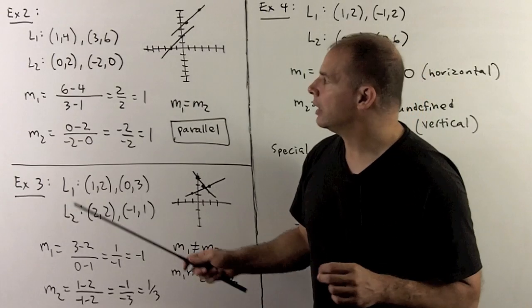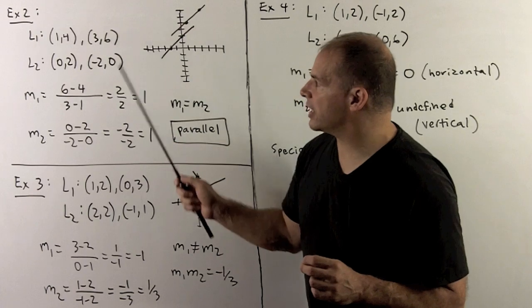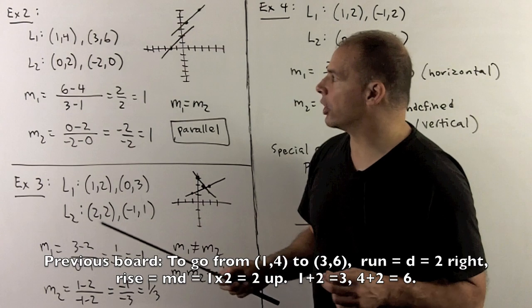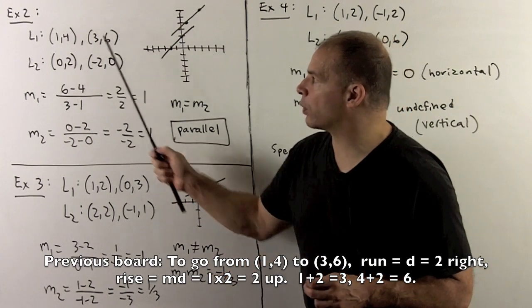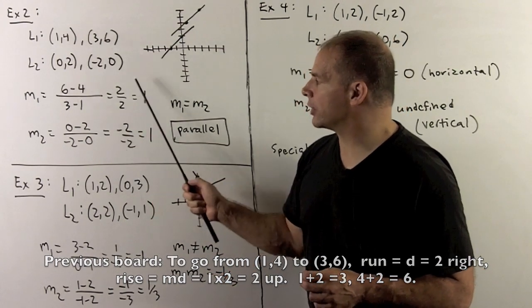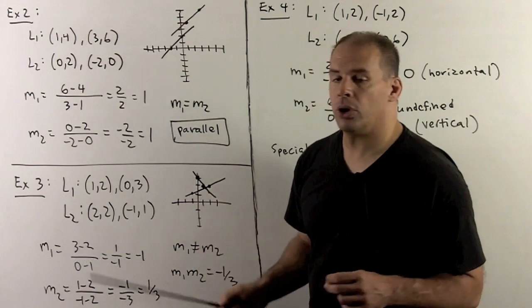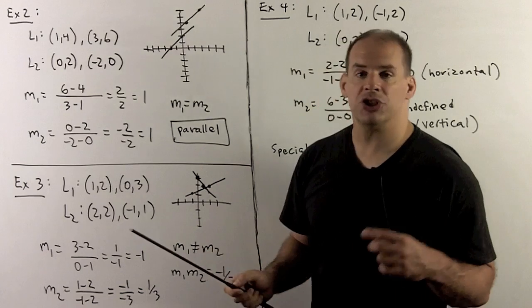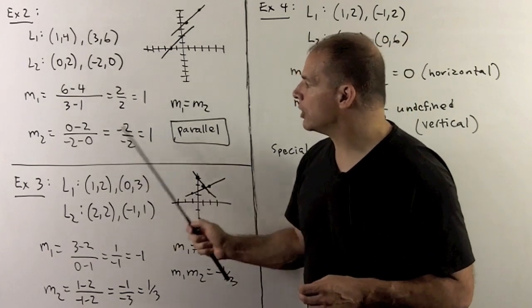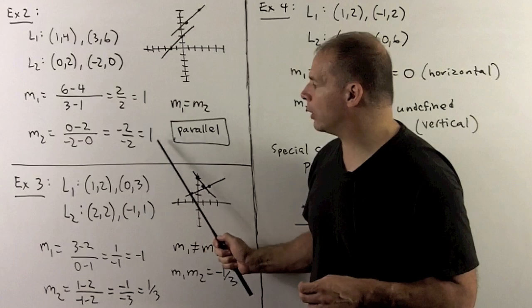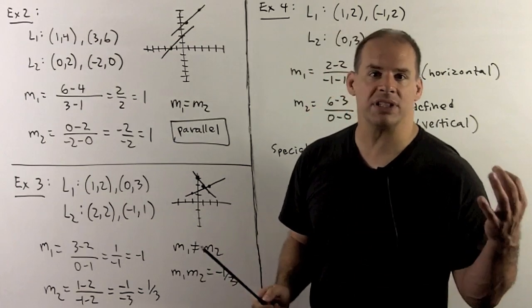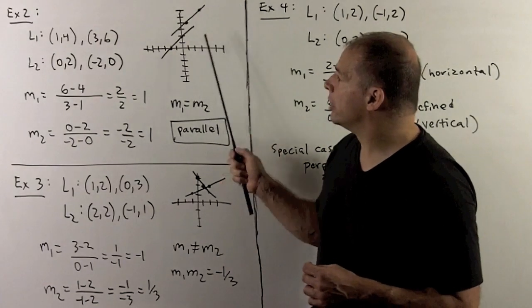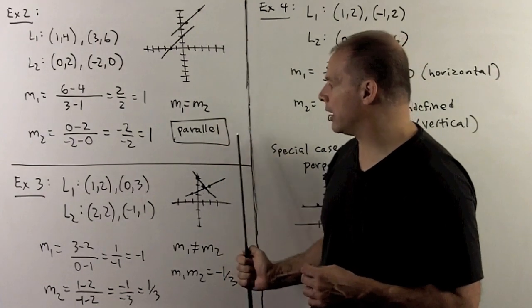Next example: the line through (1, 4) and (3, 6), and the line through (0, 2) and (minus 2, 0). First slope: change in y is 6 minus 4, change in x is 3 minus 1, giving 2 over 2 = 1. Second slope: change in y is 0 minus 2, change in x is minus 2 minus 0, giving minus 2 over minus 2 = 1. The slopes are equal, so plotting the points shows the lines never intersect — they are parallel.